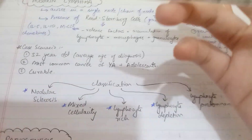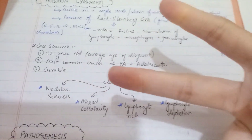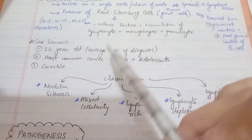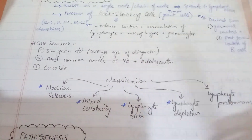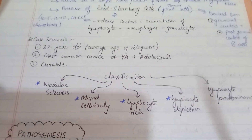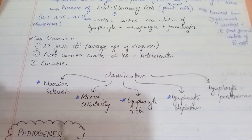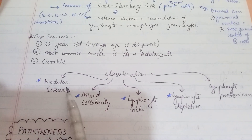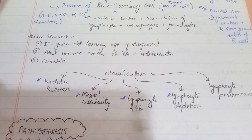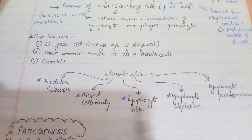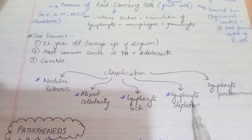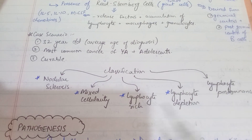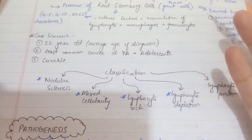The most important thing about Hodgkin's lymphoma is the classification. It is divided into two types: classical and non-classical. The classical types include nodular sclerosis, mixed cellularity, lymphocyte-rich, and lymphocyte depletion. These need to be learned by heart.